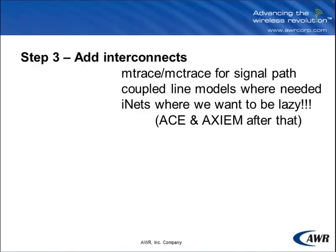In step three we will add the interconnects. Where we are very concerned with signal path performance, we will explicitly use M-Trace, a routable microstrip line, or MC-Trace for our signal path. Where we have coupled lines, we will use a coupled line model to explicitly capture these couplings — for example, the pad stacks that come off of component parts, which are coupled to each other. Everywhere else we will use i-nets, a great way to route lines on a PCB to examine later. We will use i-nets for control lines and some signal path as well, using ACE during design and Axiom during verification, combining M-Trace, coupled line models, and i-nets.